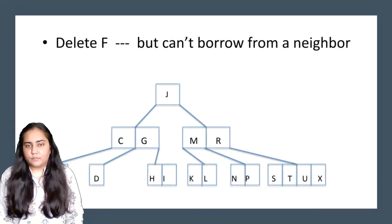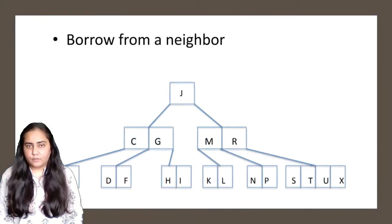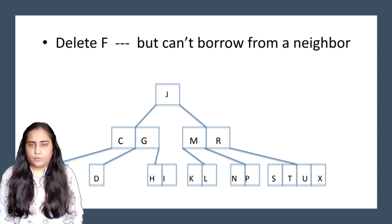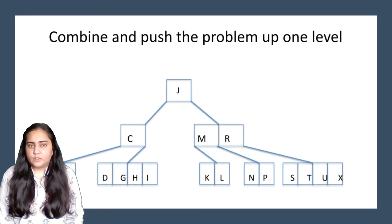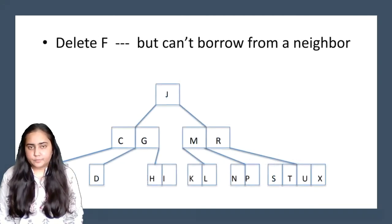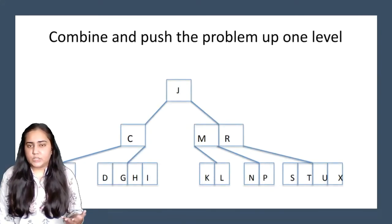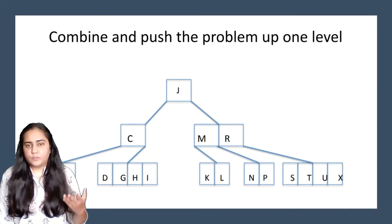Now if I want to delete F from next to D, I cannot borrow from the neighbor because doing so would leave fewer than two keys in that node — violating the B-tree property. So we must combine the two nodes. The nodes with D and H, I are combined, and G is also pulled down, forming D, G, H, I. Then we push the problem upward one level.